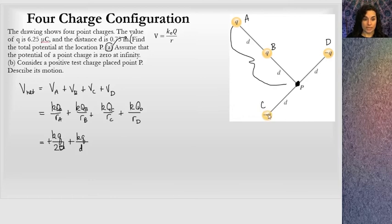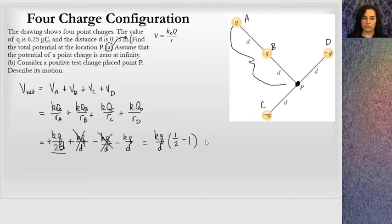For point charge C, it has a negative charge. So I'm going to put minus KQ over, and it has a distance D from point P, and then also D is in the same situation, KQ over D. I'm going to notice that these two terms are equal and opposite of one another. So I'm left with two terms. I have KQ over 2D minus KQ over D. I'm going to factor out a KQ over D, and in the first term it leaves a 1 half, and in the last term it leaves a minus 1.